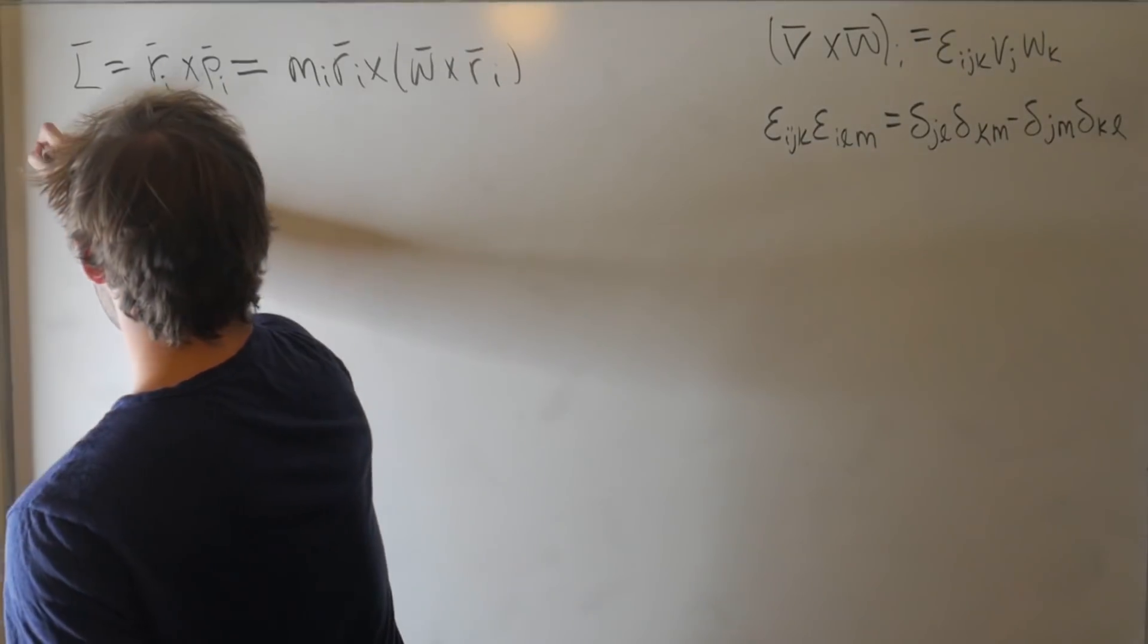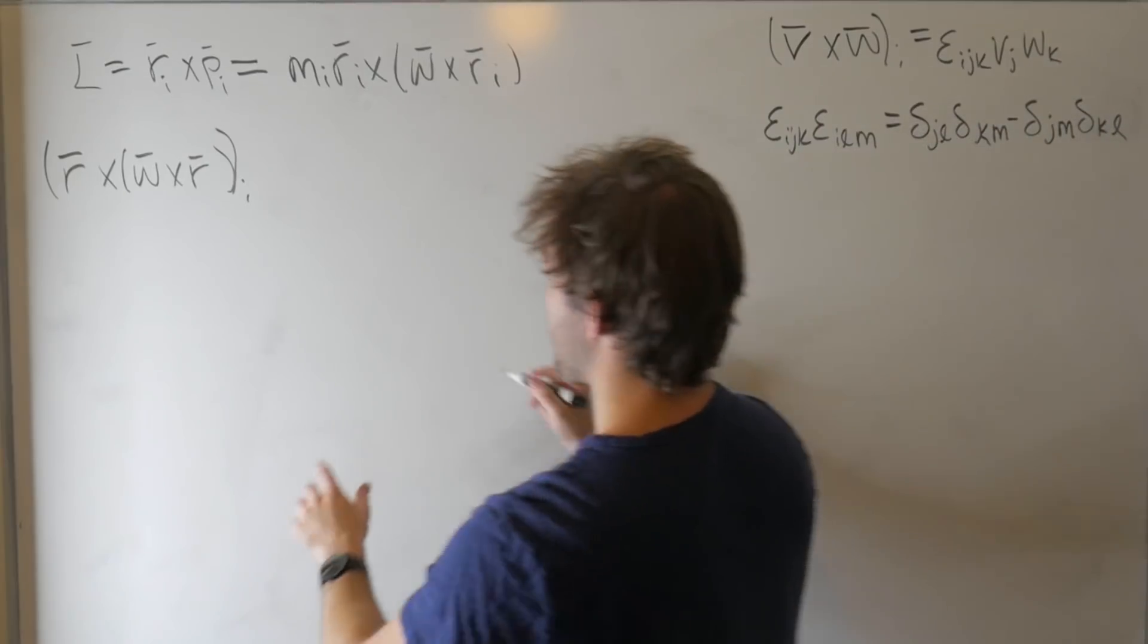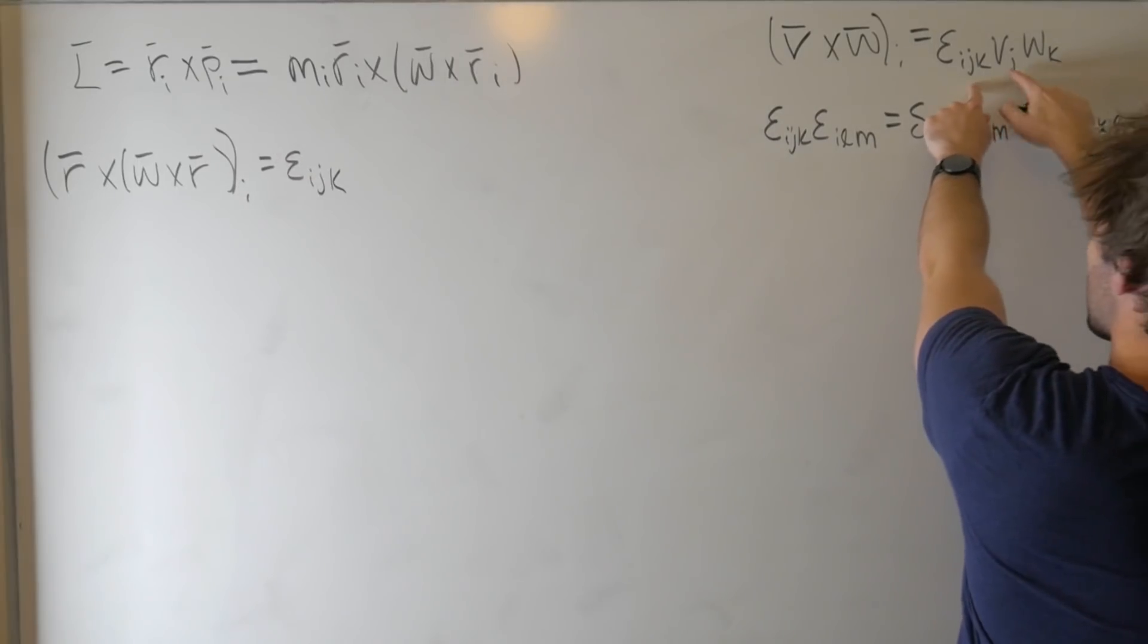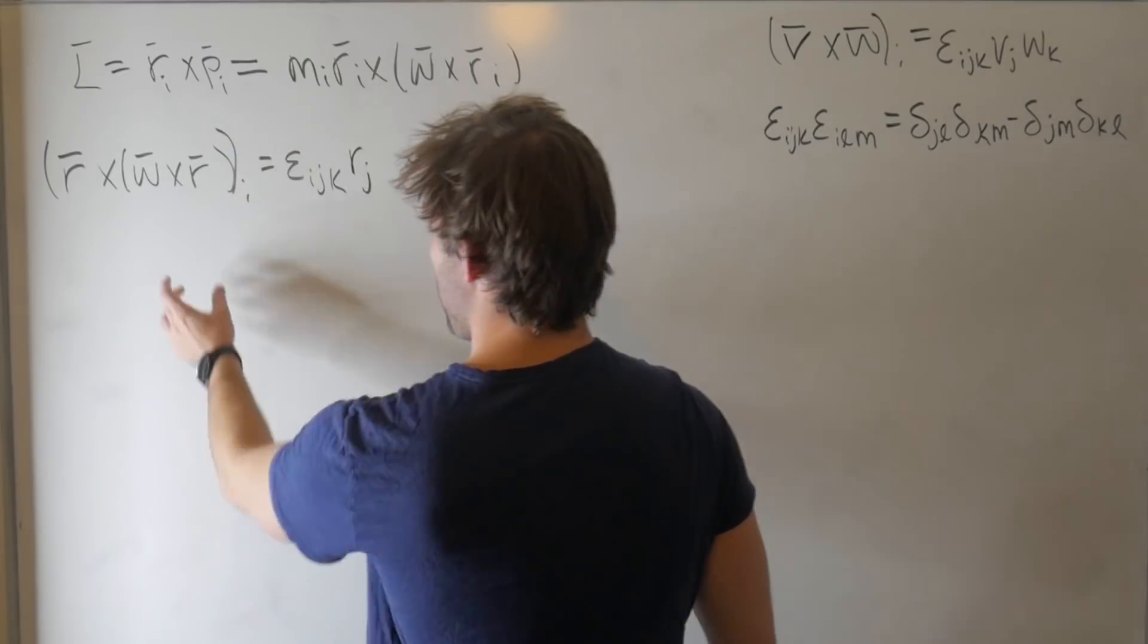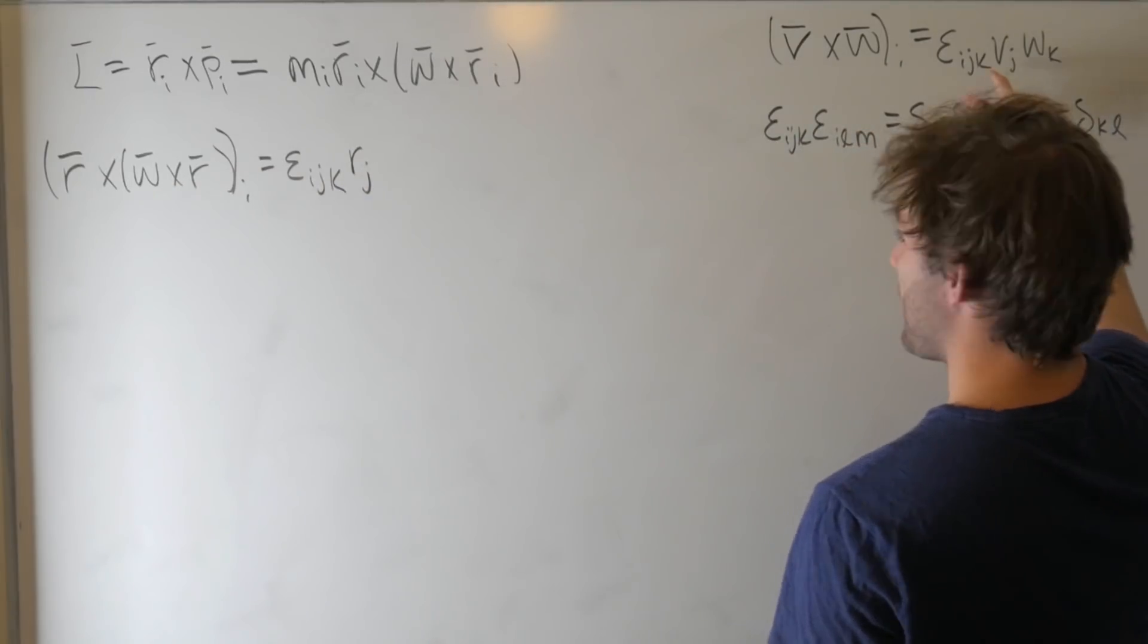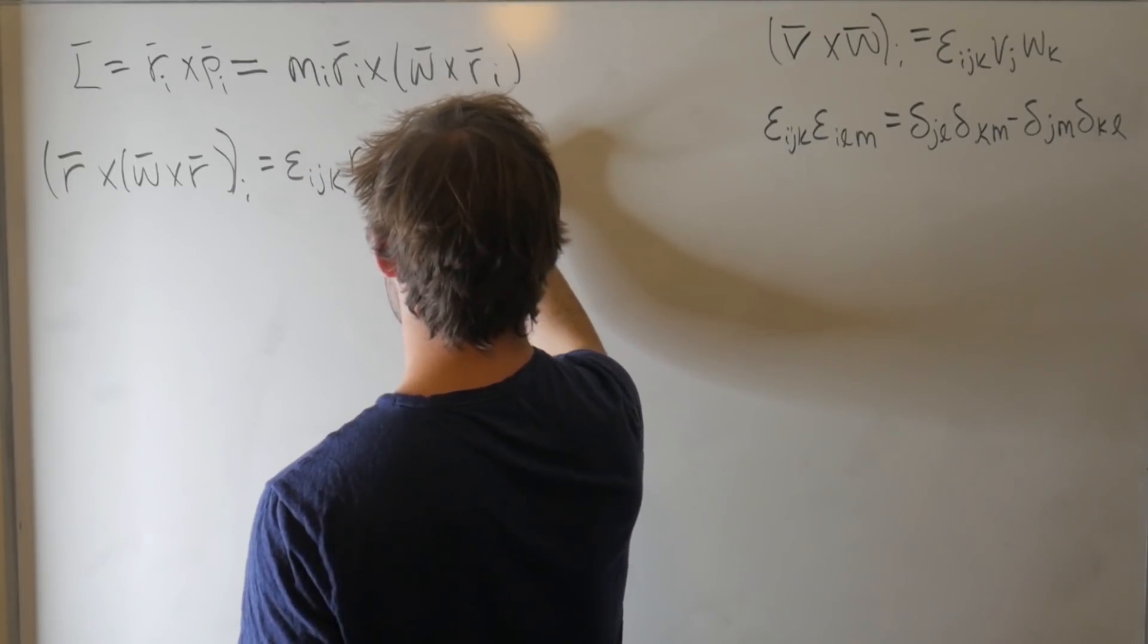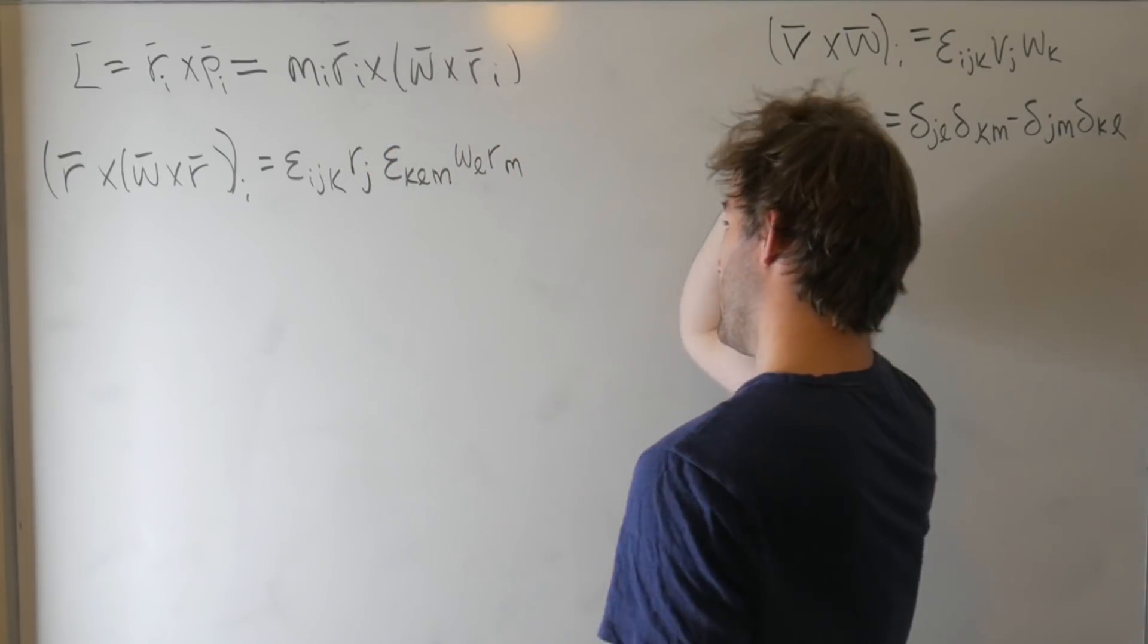Well, based on this, I need the Levi-Civita symbol, and that's the thing where the first index is not to be summed over. So epsilon_ijk. The j goes with the first vector, so it's this one. So that's going to be an r_j. But then we also have another cross product here, but this is going to have to reduce to the k-th component. So the k-th component has to survive. So we'll call this epsilon_klm omega_l r_m.